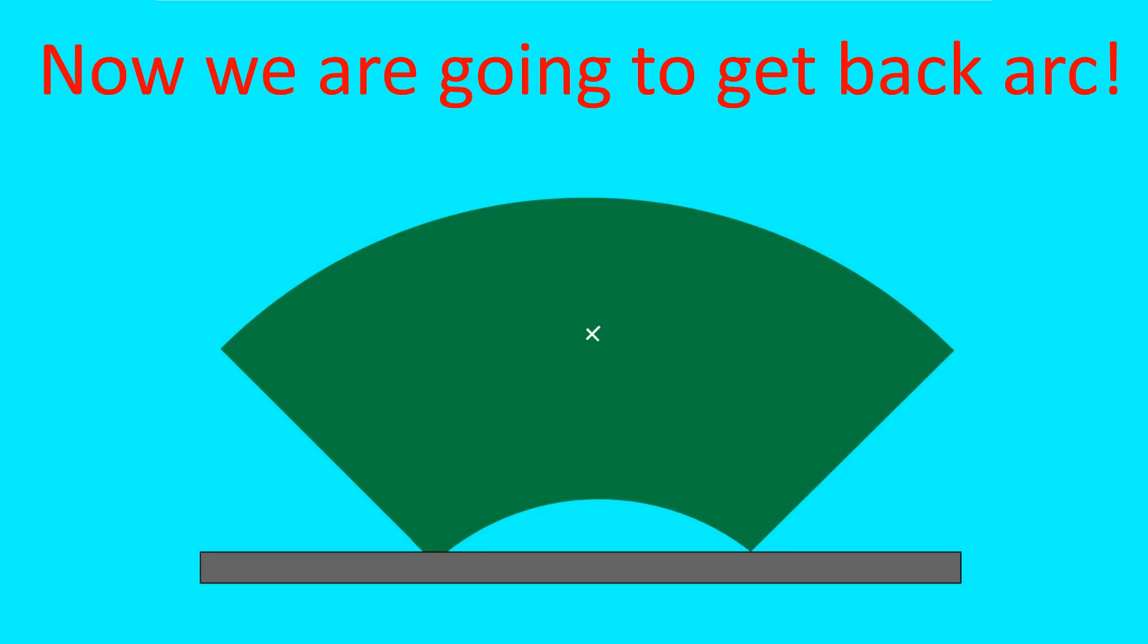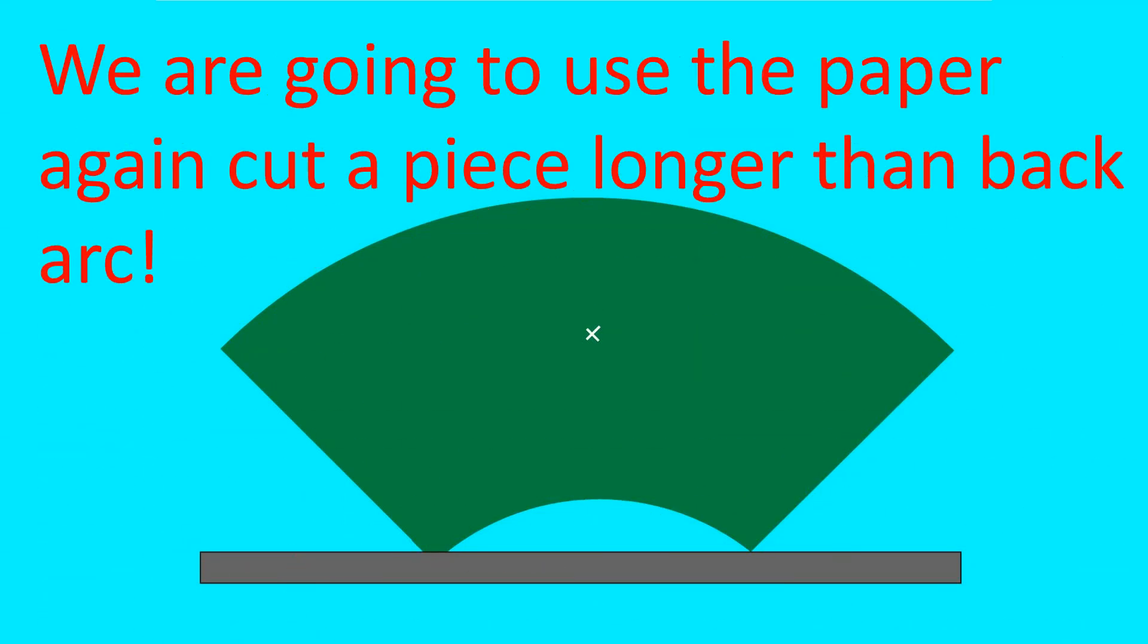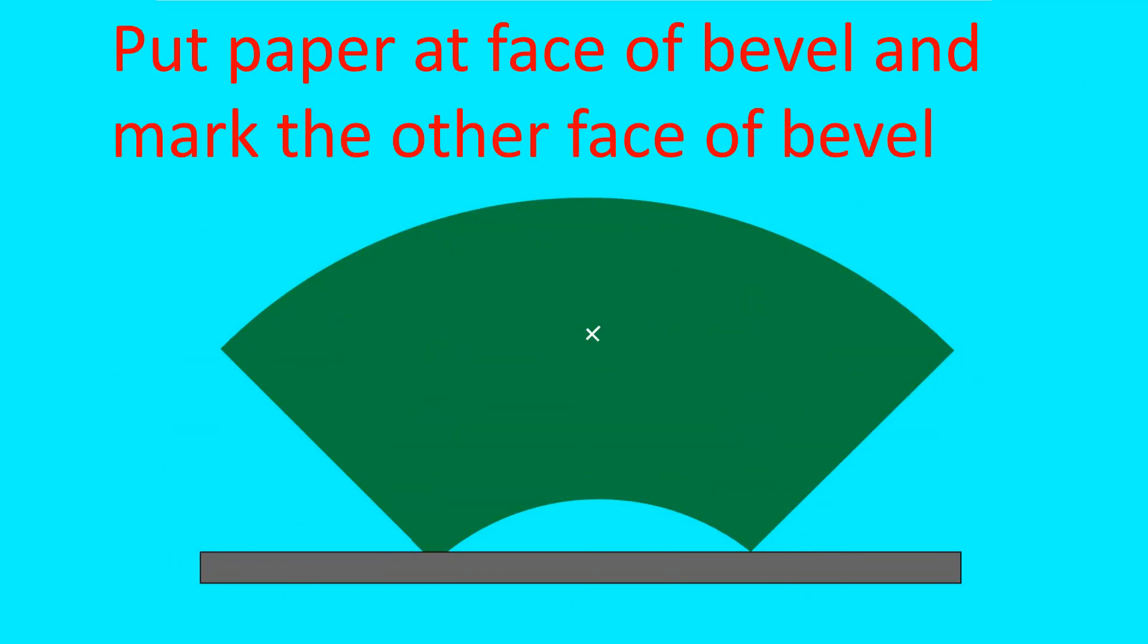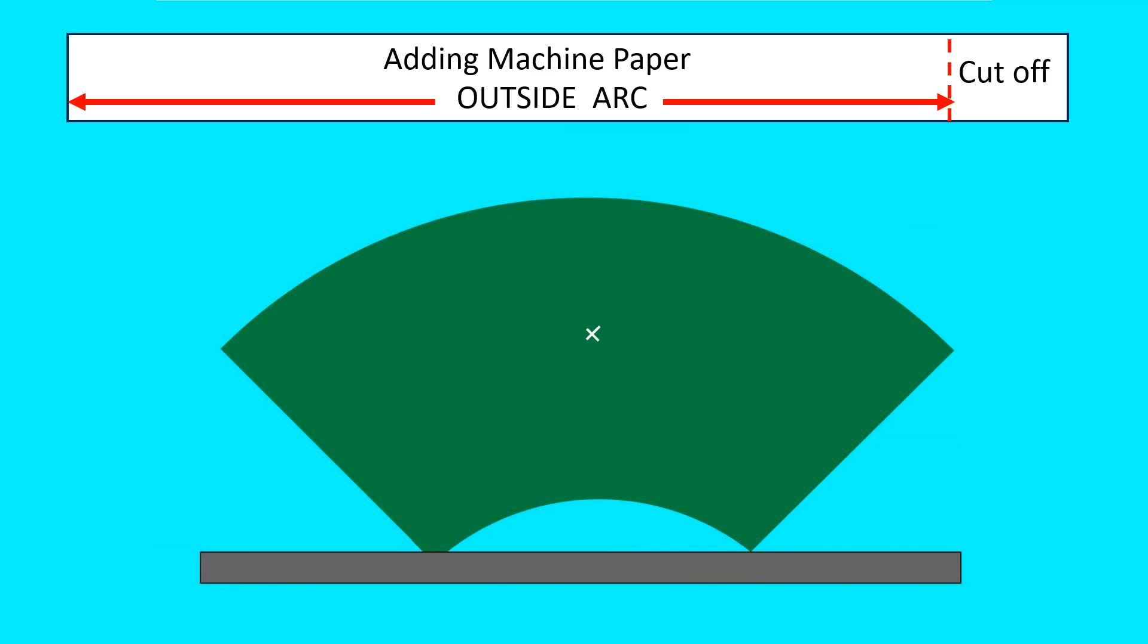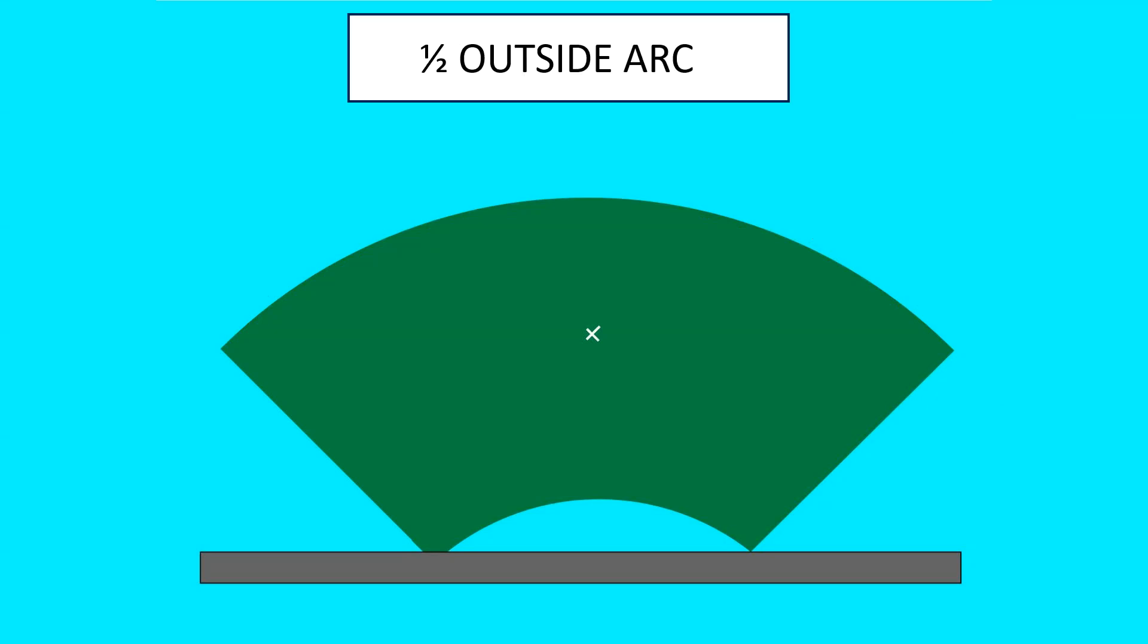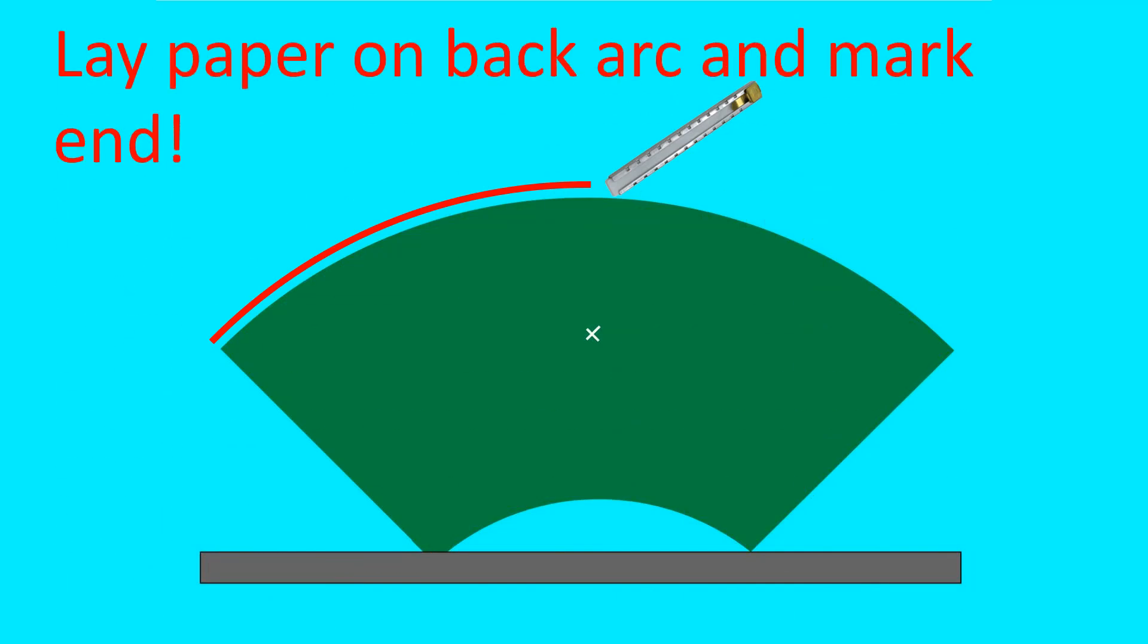Now we're going to get the back arc. We're going to use the paper again. Cut a piece longer than the back arc. Put paper at the face of the bevel and mark the other face of the bevel. There's your adding machine paper with the outside arc. Fold it in half. And that's half of the outside arc. Pretty easy. No math. Lay the paper on the back arc and mark the end.